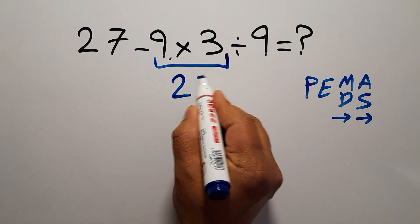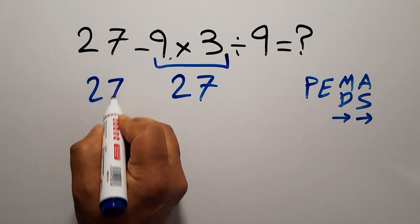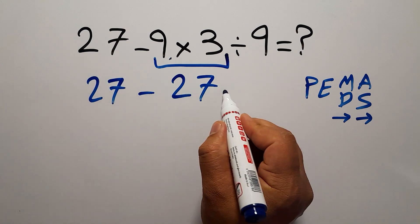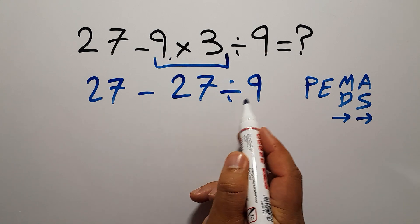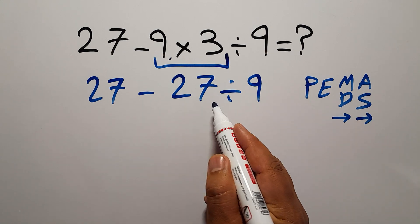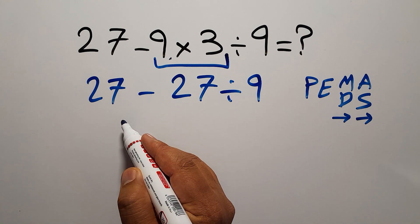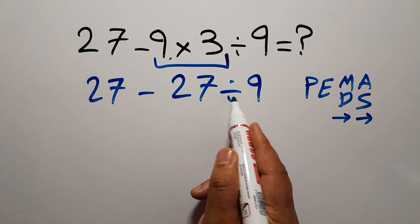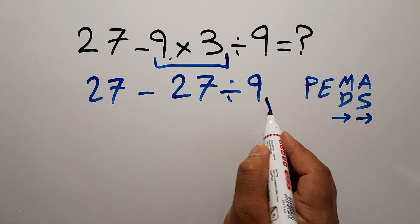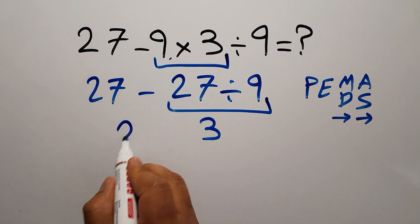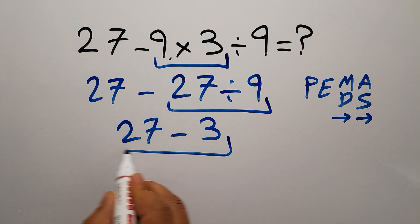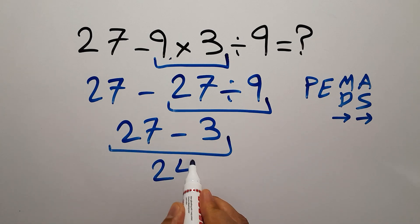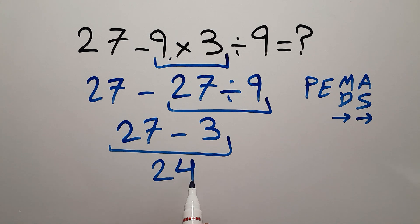First, 9 times 3 equals 27, so we have 27 minus 27 divided by 9. Now we do this division because in PEMDAS division comes before subtraction: 27 divided by 9 equals 3. So we have 27 minus 3, which equals 24. Therefore our final answer is 24.